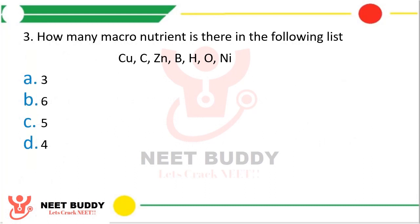Question 3: How many macronutrients are there in the following list? The correct answer is Option A, that is 3 macronutrients are there in the list, that is carbon, hydrogen, and oxygen. These 3 are macronutrients.